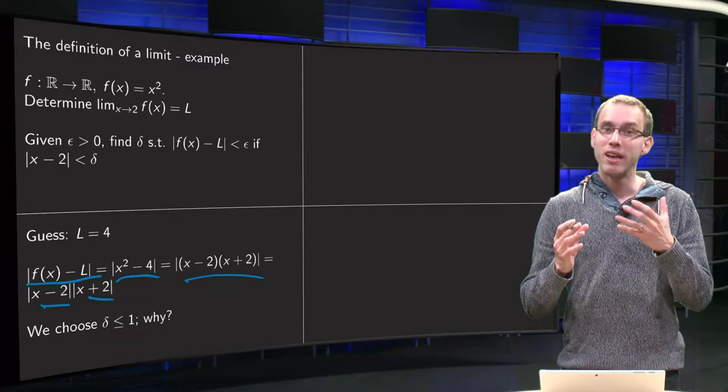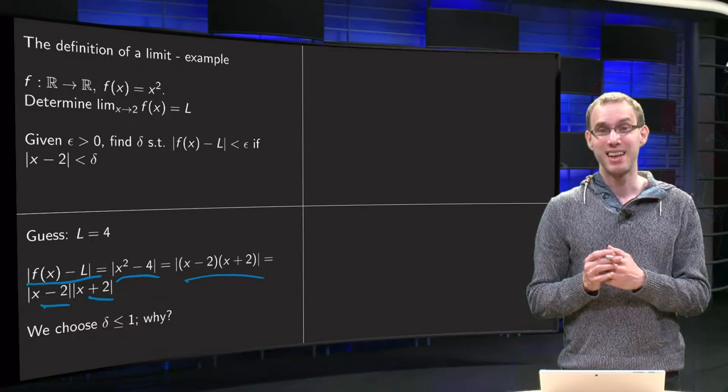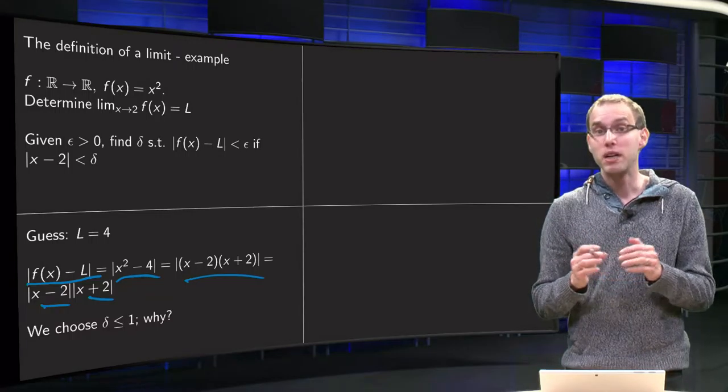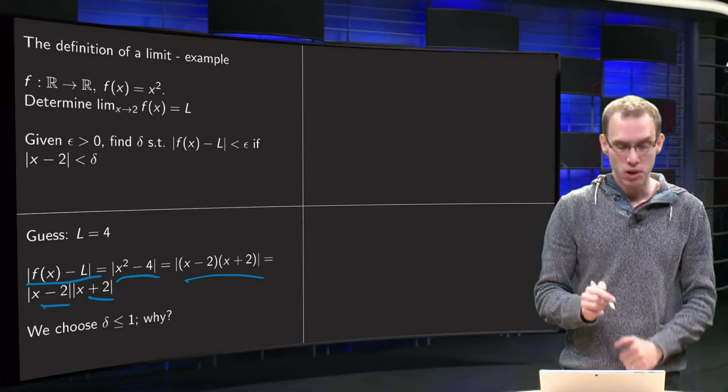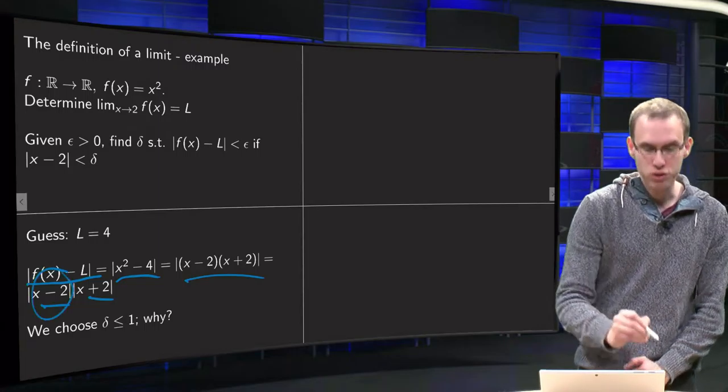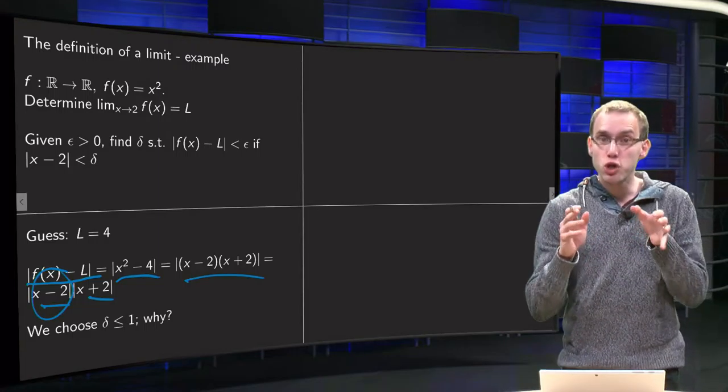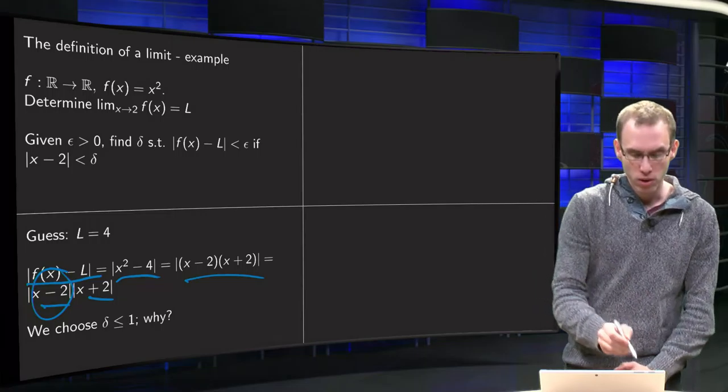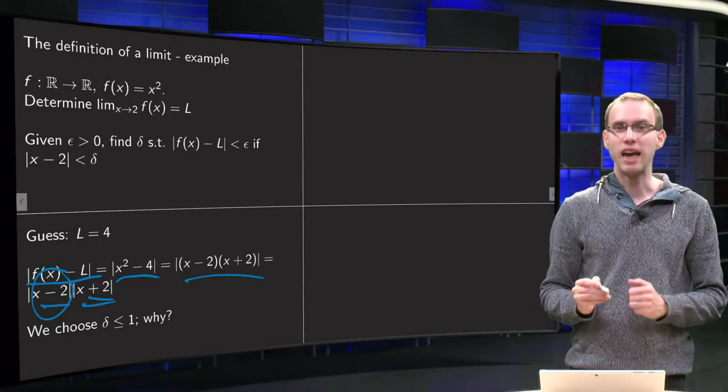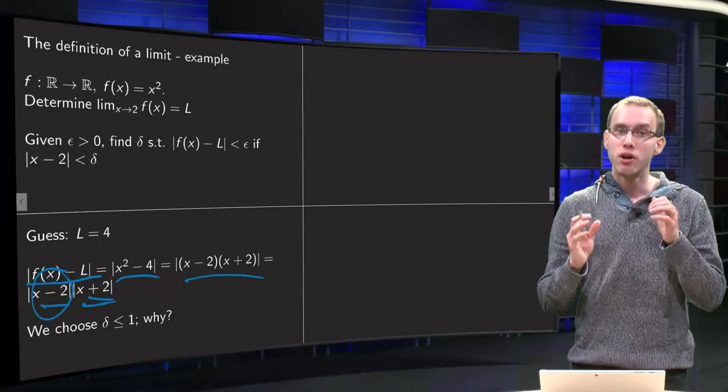And then we see, well, x will probably be chosen close to 2. So this x minus 2 is going to be our small quantity. But we also have to take care of this x plus 2 over there.